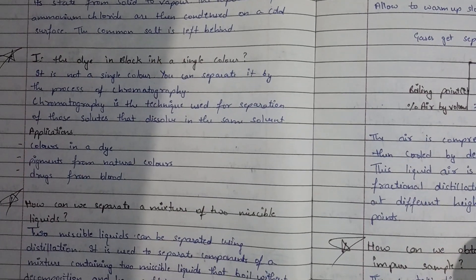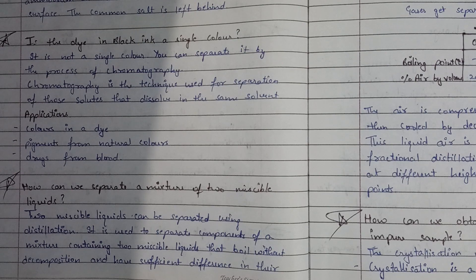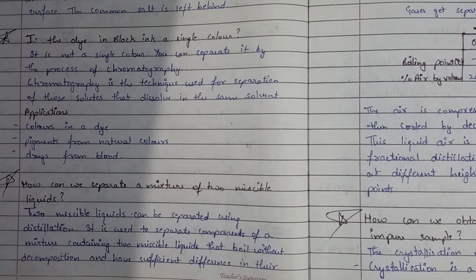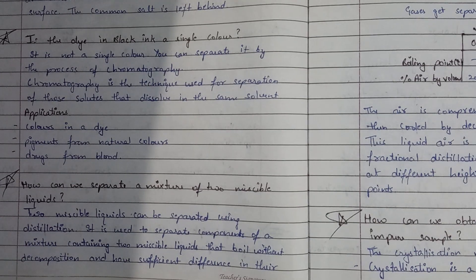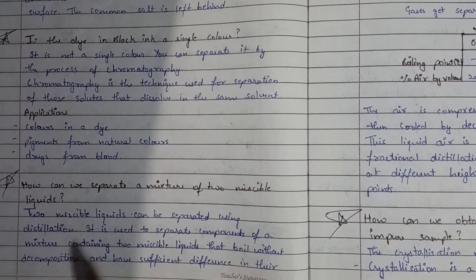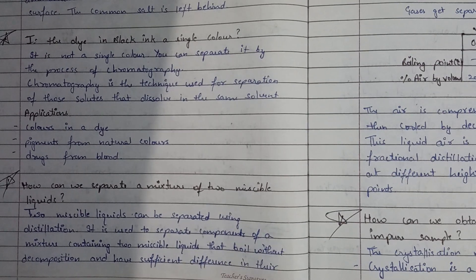How can we separate a mixture of two miscible liquids? We can separate two miscible liquids using the distillation method. Distillation involves selective boiling and subsequent condensation of components in a liquid mixture. It is used to separate components of a mixture containing two miscible liquids that boil without decomposition and have a sufficient difference in their boiling points.